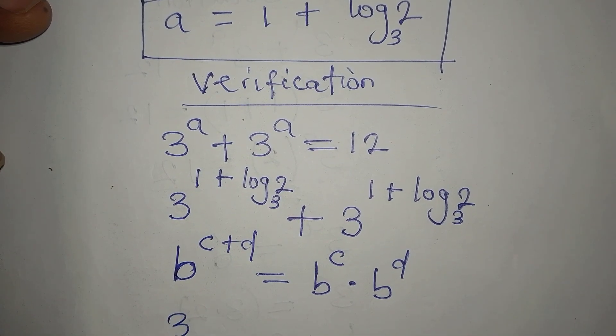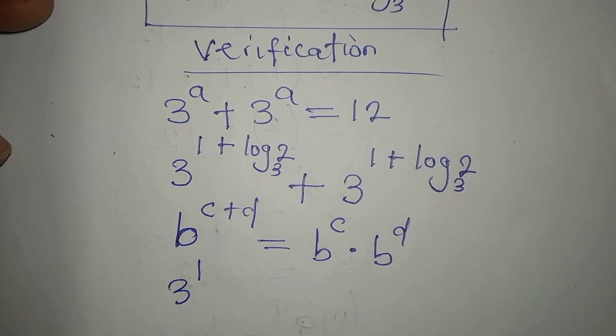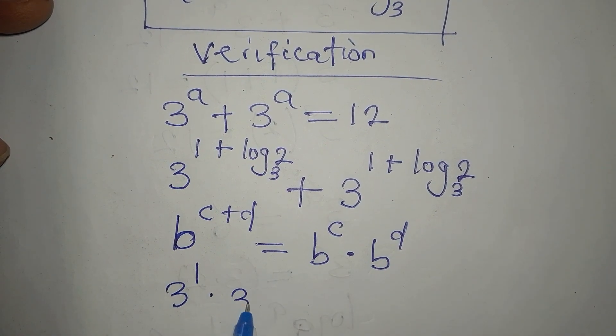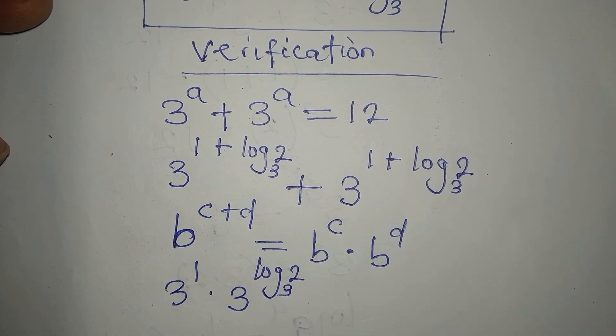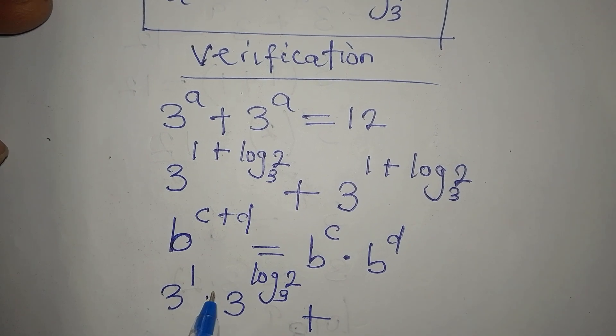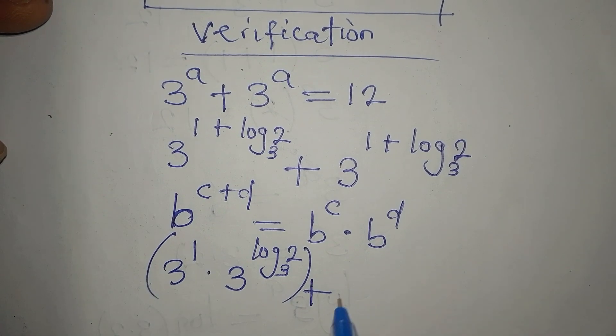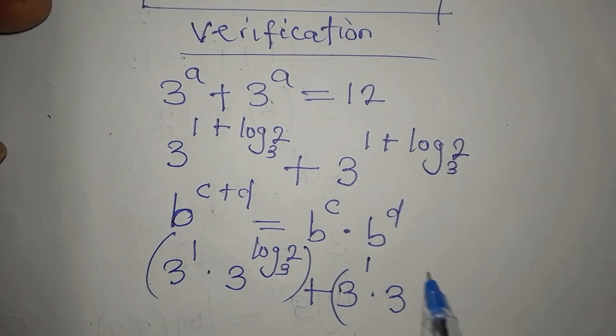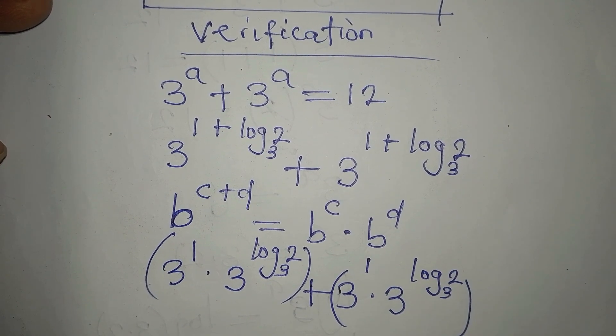So we have 3 to the power of 1 just like I have b to the power of c. And then multiply by 3 again to the power of that. So we write 3 to the power of log 2 to base 3. So I'm going to have this in two places. If you like, put this in brackets. But there's addition between them. So we have 3 again to the power of 1 times 3 to the power of log 2 to base 3. So we close this up.